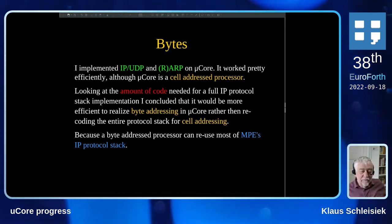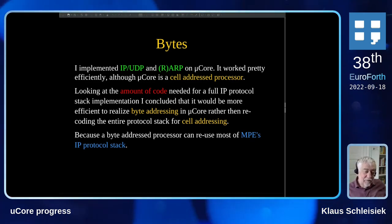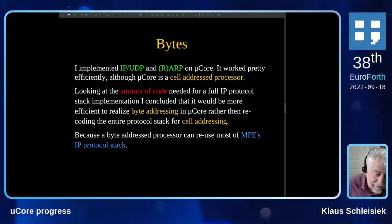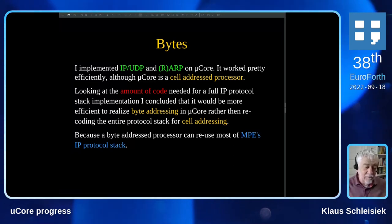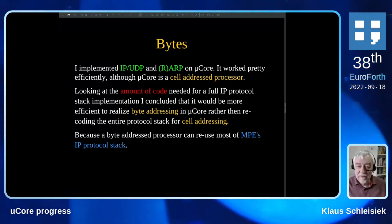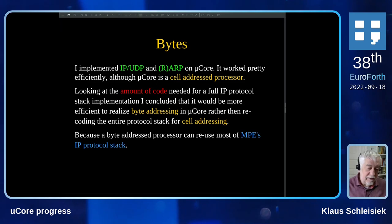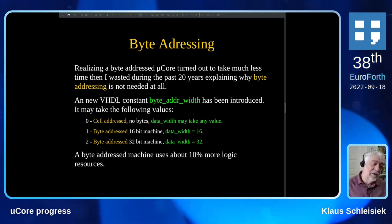But looking at the amount of code needed for a full IP protocol stack implementation, I came to the conclusion that it would be much more efficient to realize byte addressing in microcore rather than recoding the entire protocol stack for cell addressing, because the byte-addressed processor can reuse most of MPE's IP protocol stack, thanks to Steven and his implementation in the ARM software suite. So microcore needs byte addressing, and I found a very nice implementation.